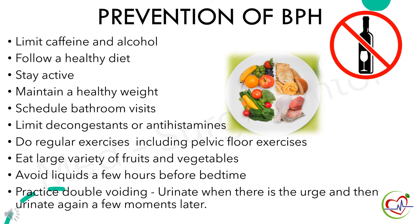Preventive measures of benign prostatic hyperplasia include: limit caffeine and alcohol, follow a healthy diet, stay active, maintain a healthy weight, schedule regular bathroom visits, limit decongestants or antihistamines, do regular exercises including pelvic floor exercises, eat a large variety of fruits and vegetables, avoid liquids a few hours before bedtime, and practice double voiding if you have symptoms — which means urinate when you feel the urge and then urinate again a few moments later.